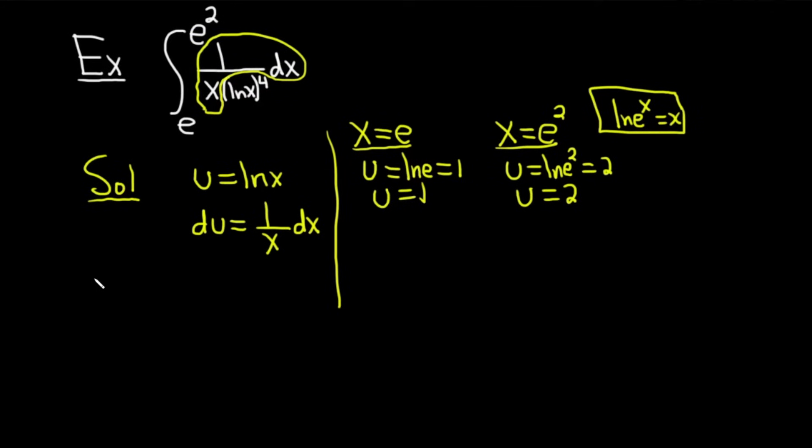I'm going to go ahead and write down the integral again down here. So we have the definite integral from e to e squared of 1 over x parentheses natural log of x, and the whole thing is to the fourth power, and we have the dx. This is equal to, so the 1 over x dx that you see is going to be du. So we have du. And then we're left with this piece on the bottom, this natural log of x to the fourth. Well, u is equal to the natural log of x. So this is just u to the fourth. Also, we said that when x was e, u was 1. So we replaced the lower limit of integration with 1. And we said that when x was e squared, u was 2. So we replaced the upper limit of integration with 2. So now we have a much simpler integral. We have du over u to the fourth power.